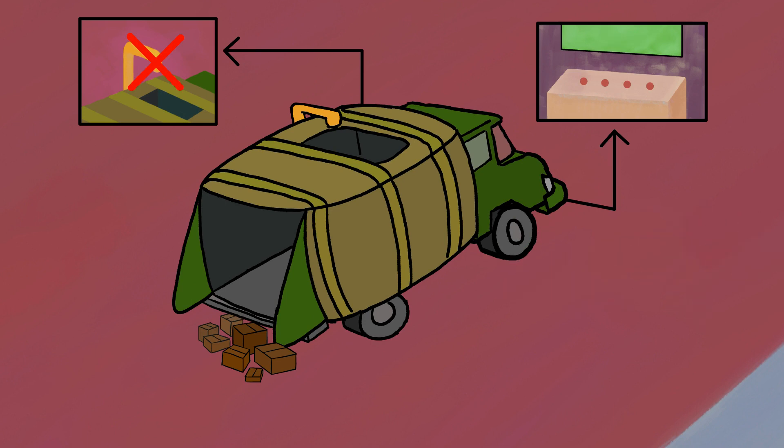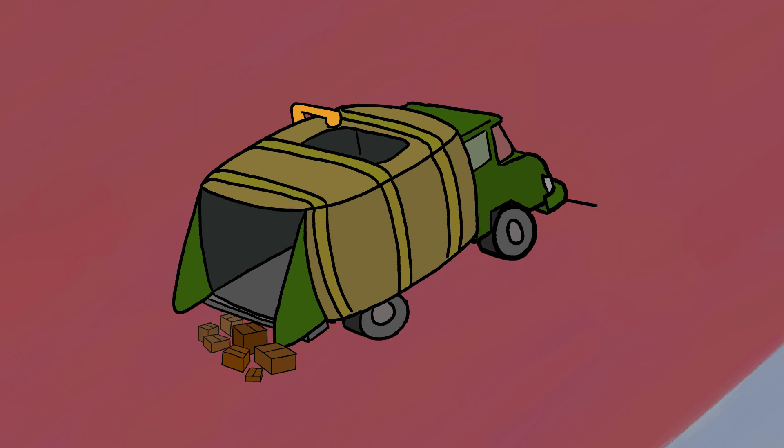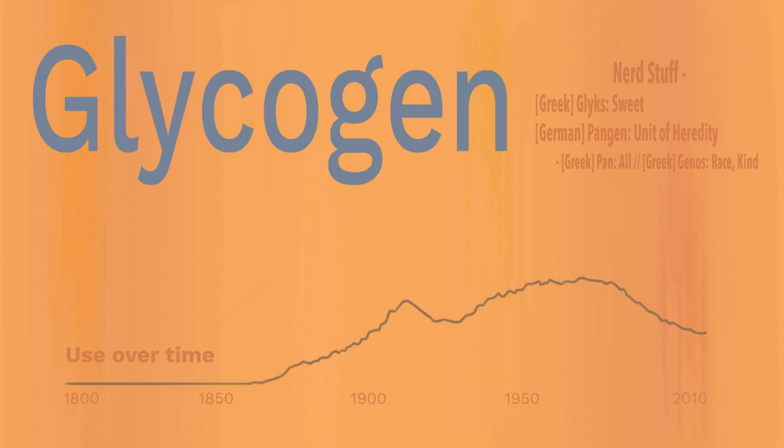Respiratory failure, heart complications, and muscle deterioration are all caused by a buildup of glycogen.